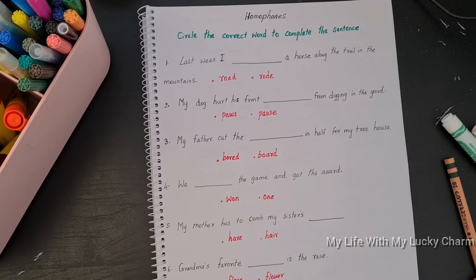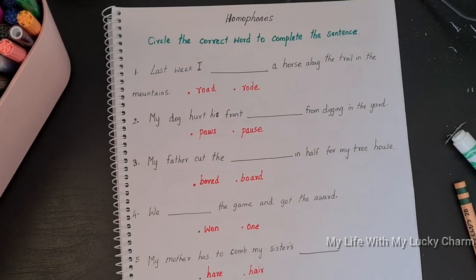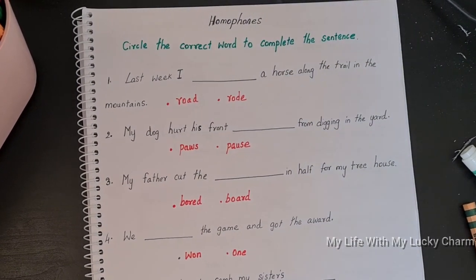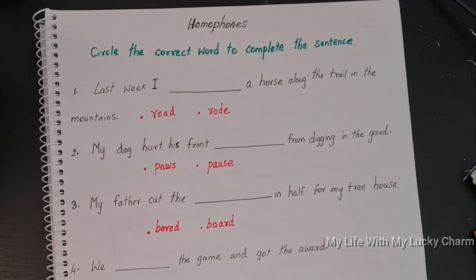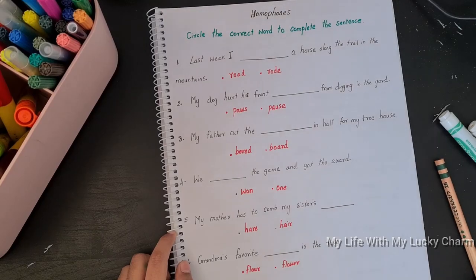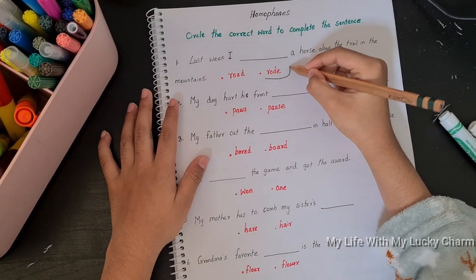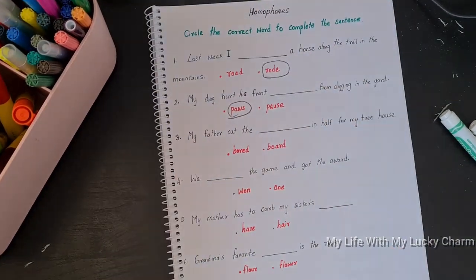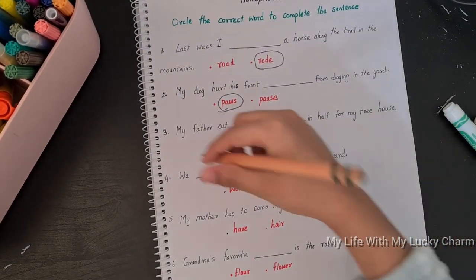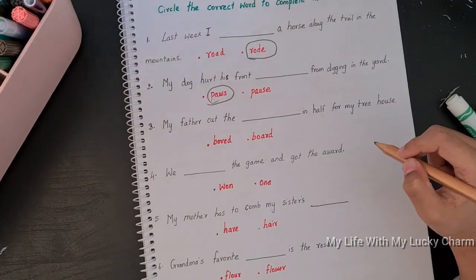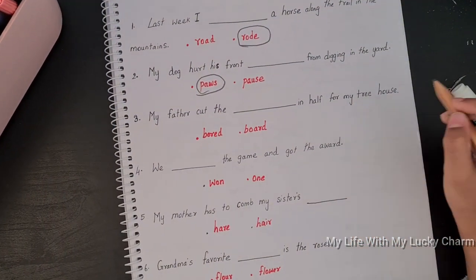So the next activity is based on homophones, where he needs to find the correct word to complete the sentence. Homophones are the set of words with the same pronunciation, but the meaning or the spelling will be different. Arrow generally gets confused with these words.